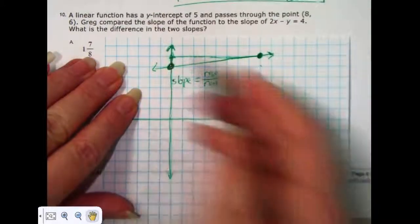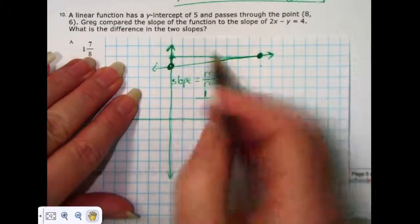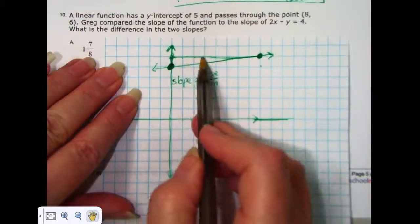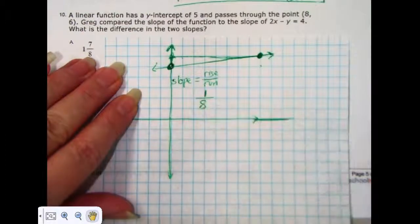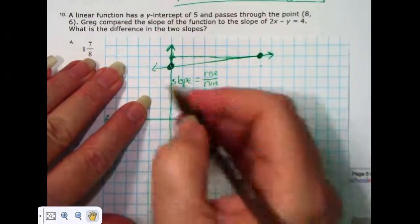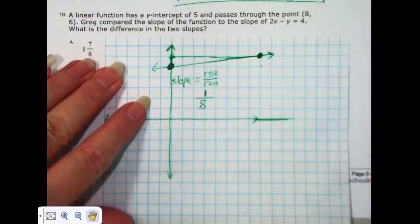I'm going to go up 1 and write 1, 2, 3, 4, 5, 6, 7, 8. So, by looking and counting, I have the slope of the first line being 1, 8.